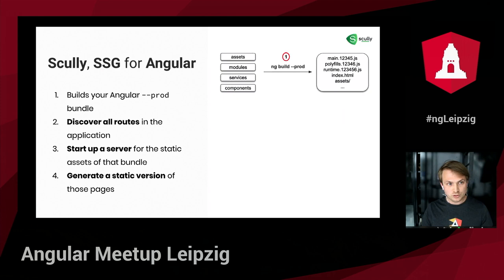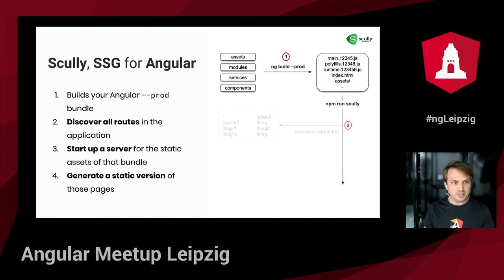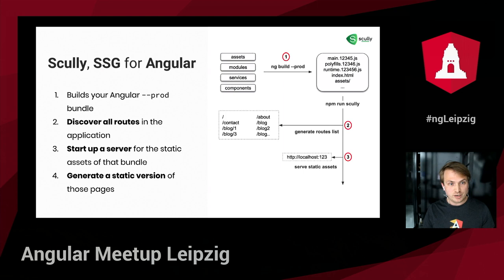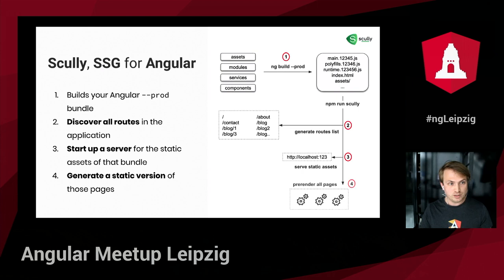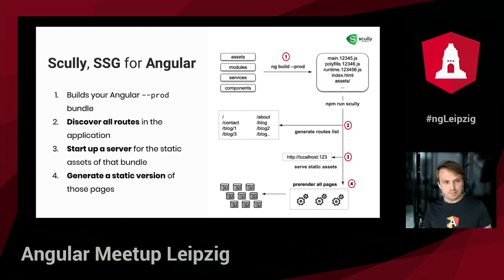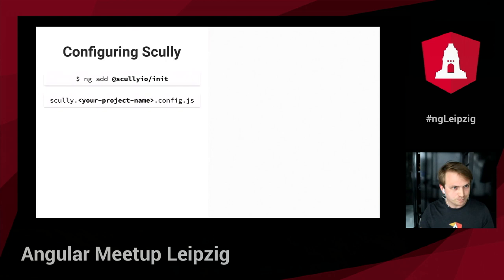As soon as we run Scully using `npm run scully`, the route discovery process starts. This process generates a full list of pages to pre-render and outputs it as an easy-to-read JSON file. Scully then fires up a static web server for the static assets of the Angular production build — we need this because our application has to be available during the process. Scully then pre-renders all the collected pages and outputs them as static HTML pages on your file system. It looks pretty simple, but there's quite a lot of well-thought magic happening behind the scenes.